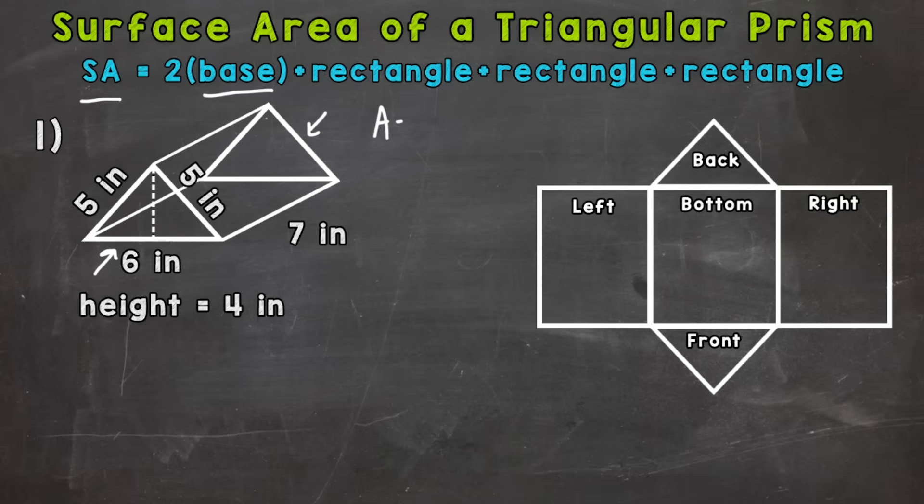So we only need to find the area of one, and that means we have the area of both. So we'll start with area equals one half base times height. That's the formula for the area of a triangle. So one half times the base is six here. So six times the height, which is that dashed line, and the height is four inches. Six times four is 24 times a half is 12. So we have 12 square inches there, and we multiply that by two again because we have two bases.